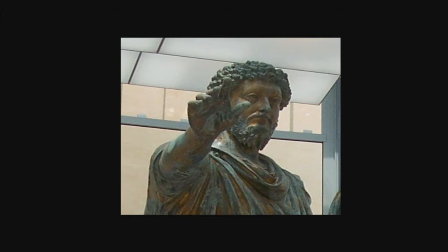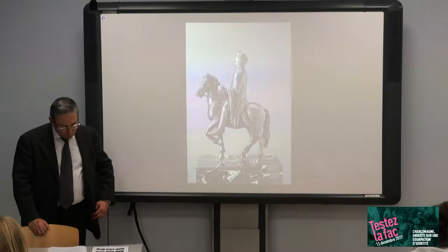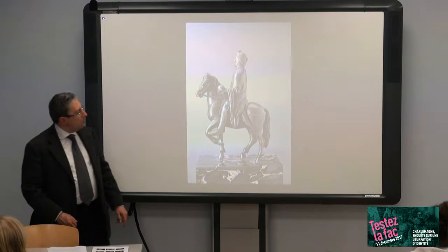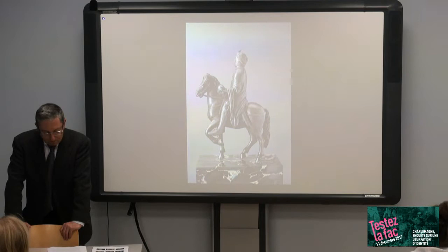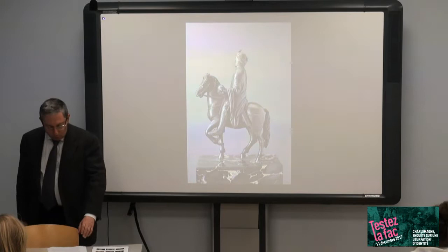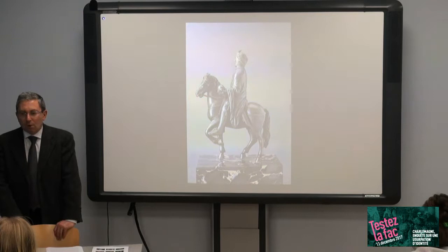Depuis le renversement de Tarquin le Superbe et l'avènement de la République, les Romains avaient le nom de roi en horreur. Notre cavalier parisien est couronné : il ne peut donc être un empereur romain. Un autre attribut que l'on voit sur notre cavalier quand on le regarde de dos ou de profil nous éloigne de Rome : le fourreau d'une épée. Cet attribut qui souligne les fonctions guerrières de notre cavalier est redondant, car il porte aussi le manteau qui est l'insigne du général romain. Une telle répétition nous éloigne de Rome.